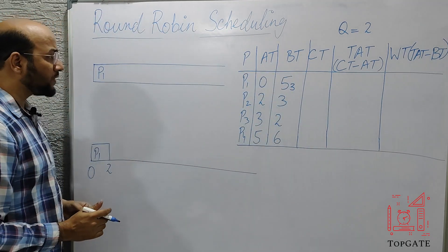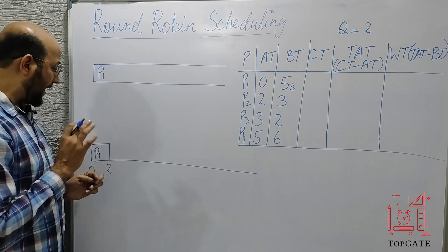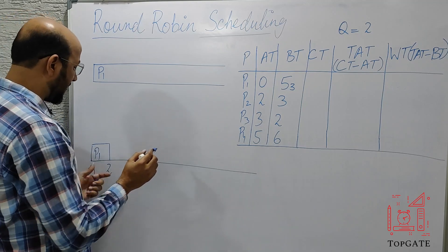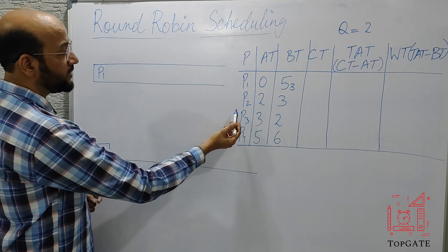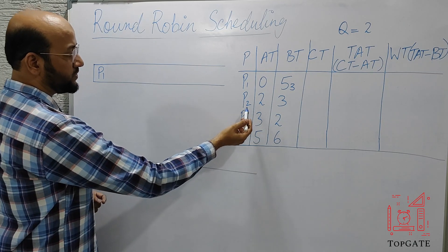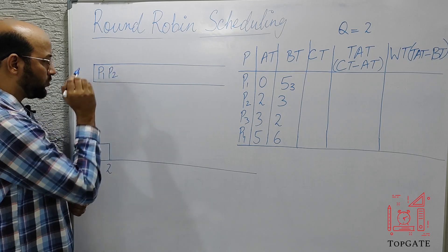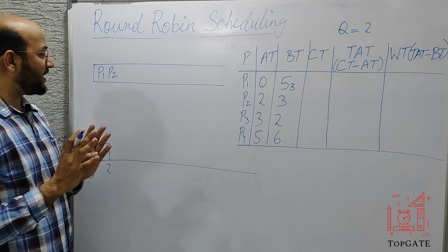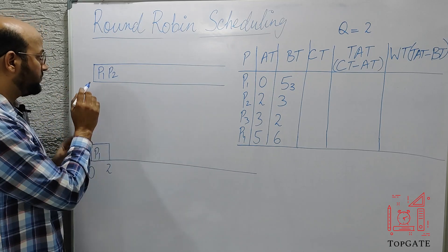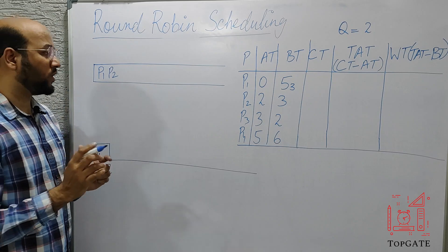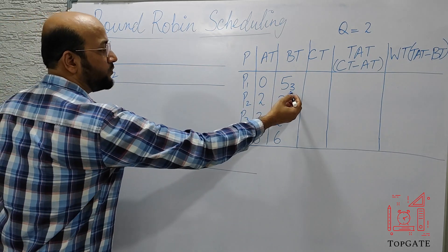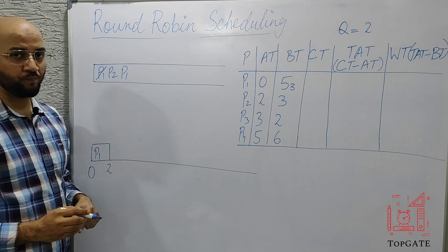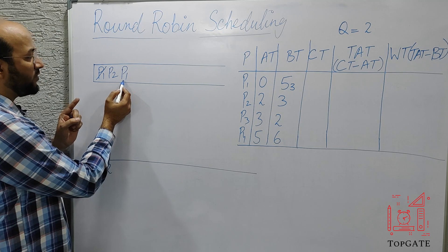Now at time 2, we follow two steps. First, check which processes arrive at time 2 — P2 arrives, so we add P2 to the ready queue. Second, check if P1 has completed — it hasn't, with 3 units left, so we cut P1 and send it to the tail of the ready queue. Now P2 is at the head and P1 is at the tail.